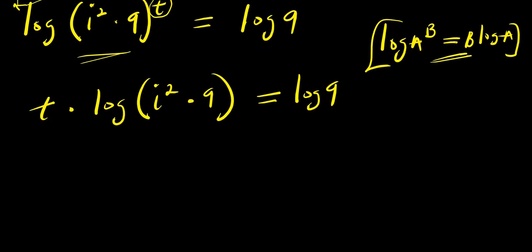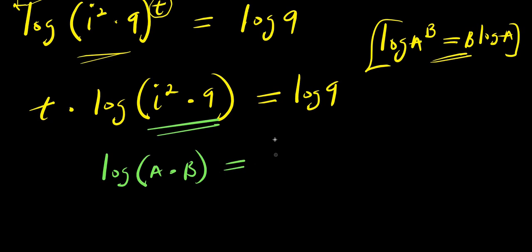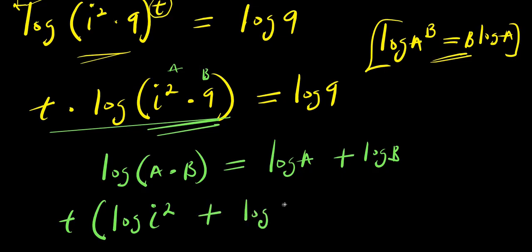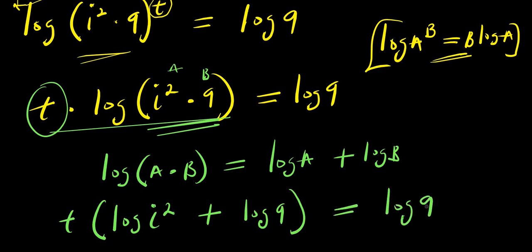There is also another logarithm property to apply here, because this is multiplication of i squared times 9. If you have log of a times b, this equals log a plus log b. So this gives us t times the quantity log of i squared plus log 9, and this equals log 9.